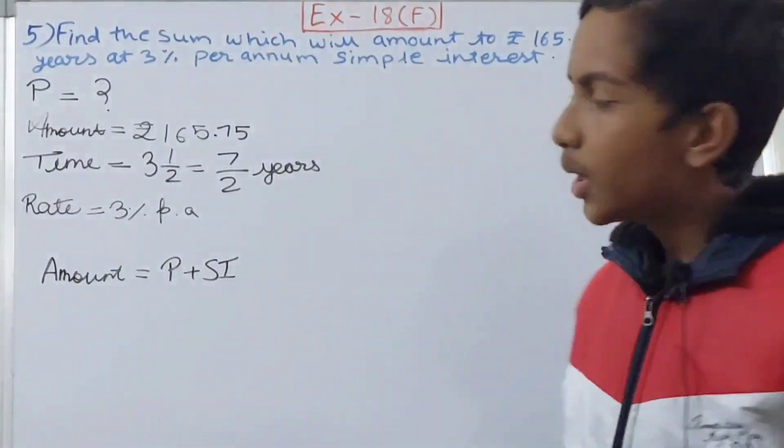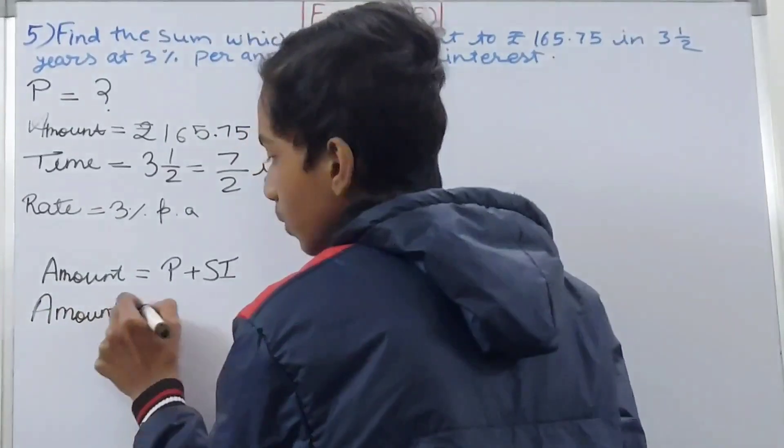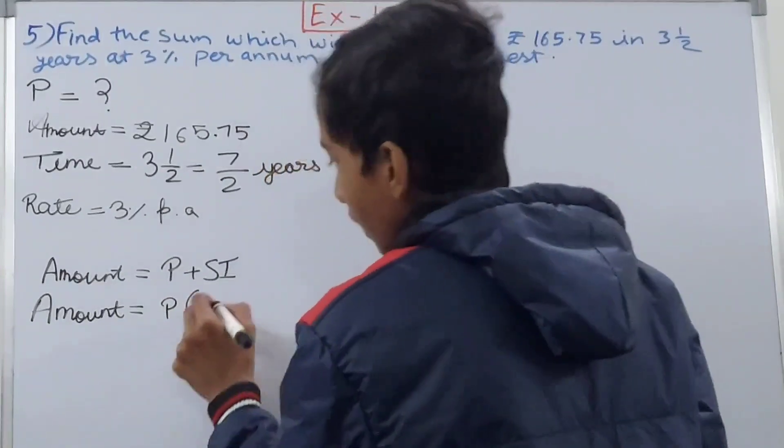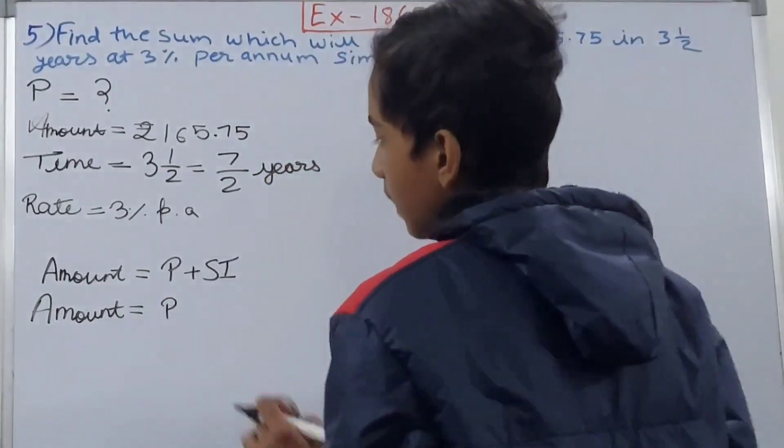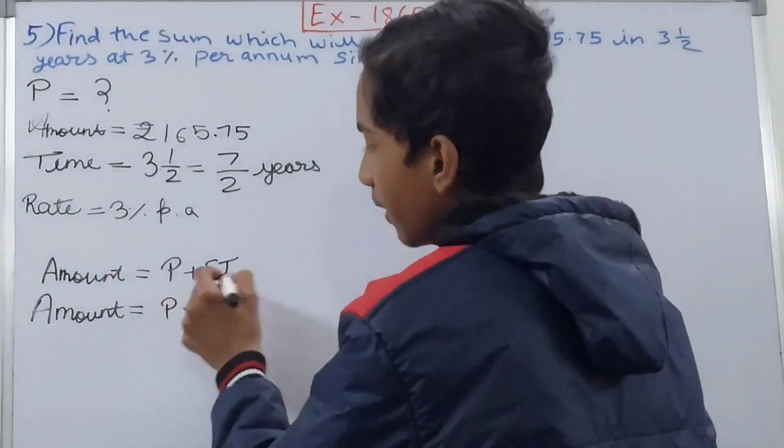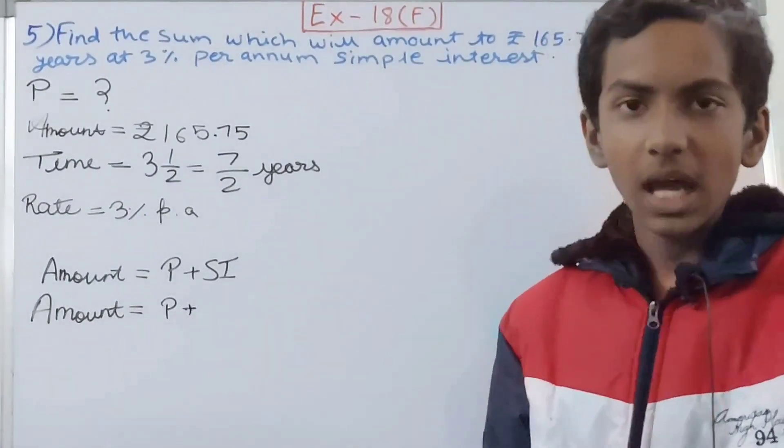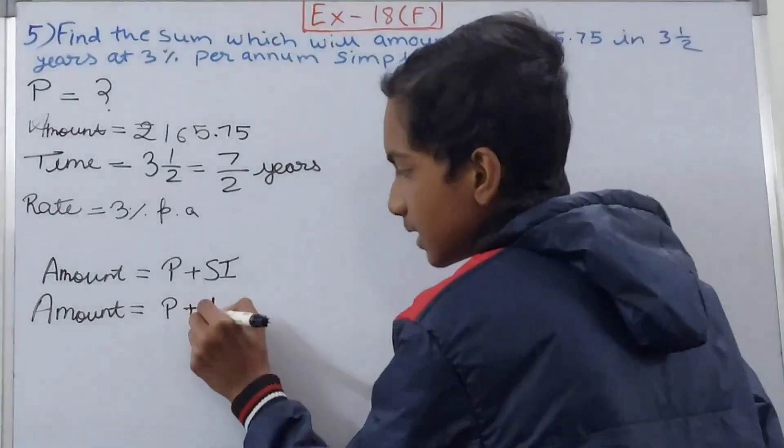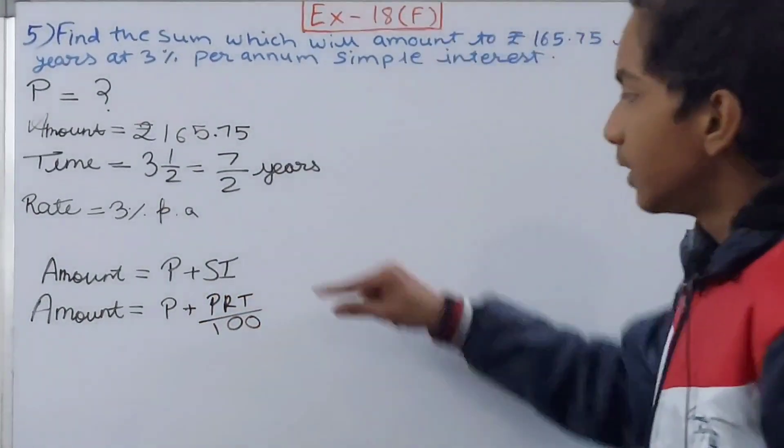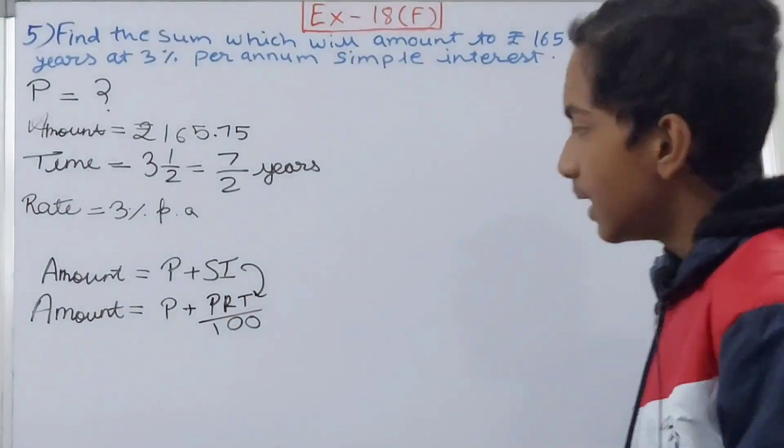With this we will derive a formula. Amount equals P plus SI. The formula for SI is PRT/100 - principal, rate, time upon 100. So we can write this as P + PRT/100. The simple interest becomes this formula itself.